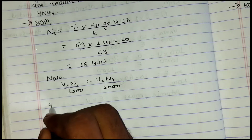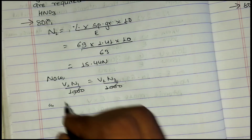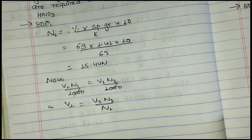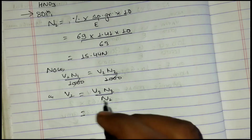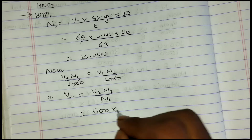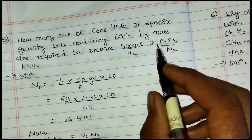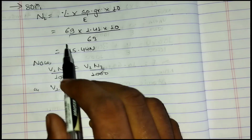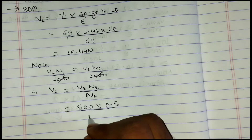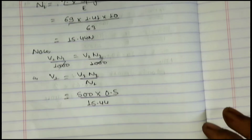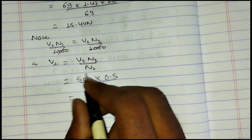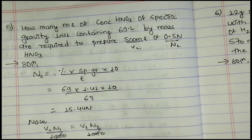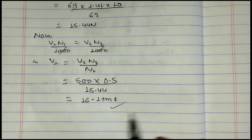Solving V₁ = 250 / 15.44 = 16.19 ml. So 16.19 ml of concentrated HNO₃ with specific gravity 1.41 and 69% purity is needed to prepare 500 ml of 0.5N HNO₃ solution.